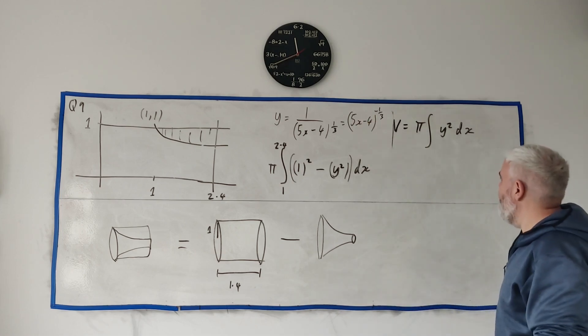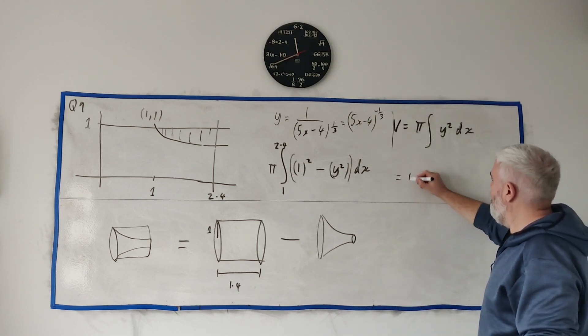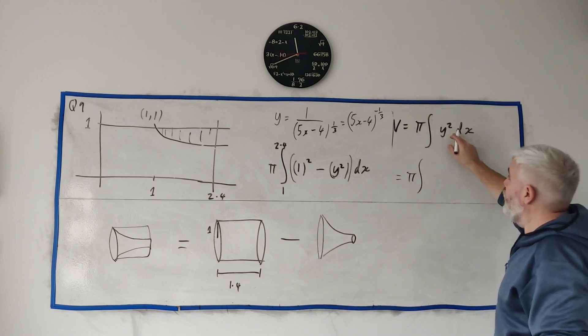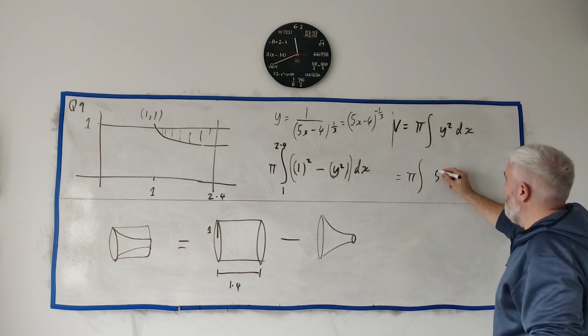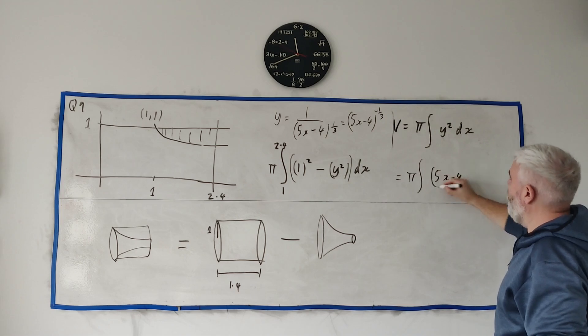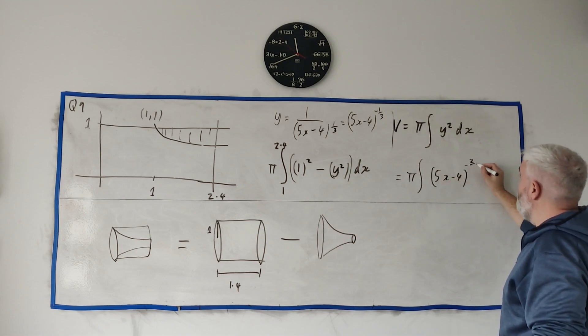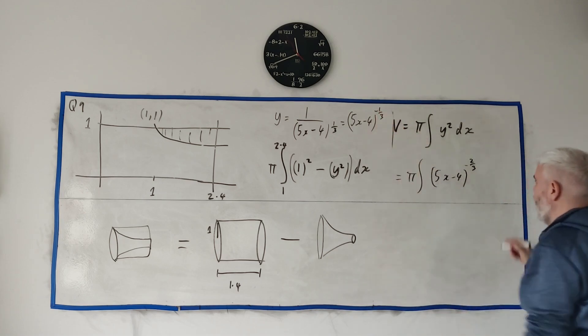I just, I'd much rather things being on the top row when we're dealing with integration. So this becomes pi by the integral of y squared - this is 5x minus 4 to the power of minus 2 over 3, so it's the squared affecting it like that, dx.